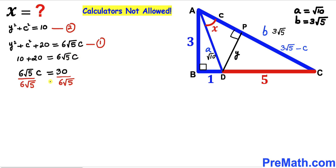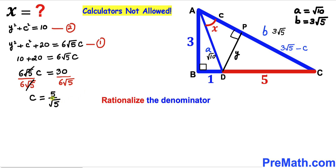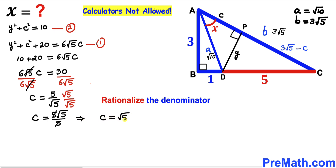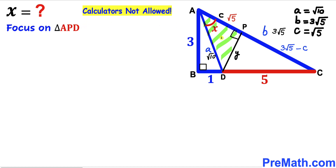We now have 30 = 6√5·c. Dividing both sides by 6√5, c = 30 / (6√5) = 5 / √5. Rationalizing the denominator by multiplying by √5/√5: c = 5√5 / 5 = √5. So our lowercase c value turns out to be √5.